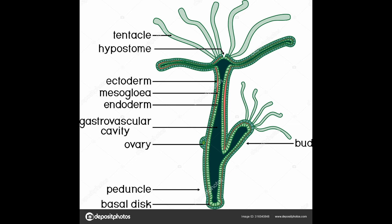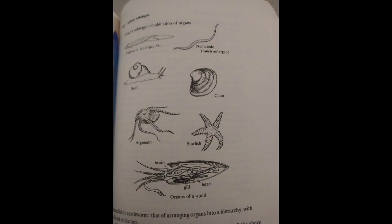The fourth substage represents the principle of combination — creatures with many organs, not just one. Here we have flatworms, nematodes, snails, clams, an argonaut, a starfish, and a squid. As in the x-ray diagram of the squid, they have all these organs, but they're not arranged hierarchically yet. I think this is where the model starts to break down — you can tell by the heterogeneity of the creatures he's grouped here. Arthur Young is a spatial thinker, and his view of evolution is the way an engineer would look at evolution, as a machine.